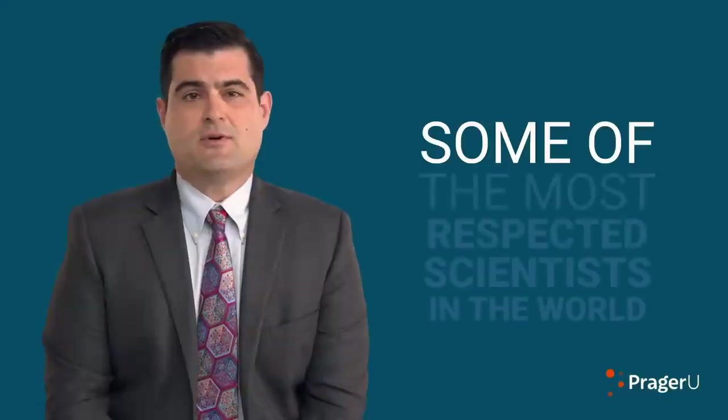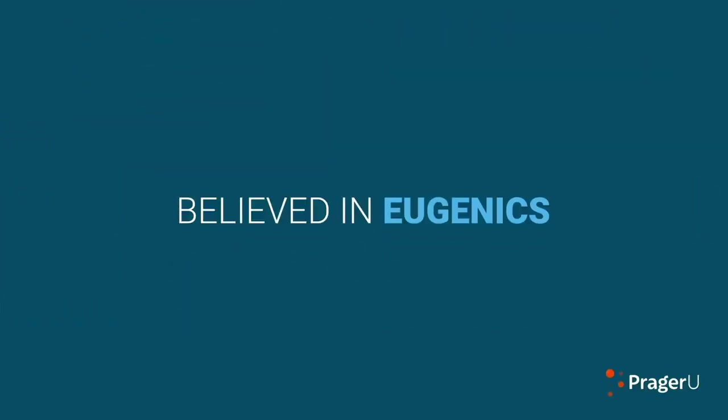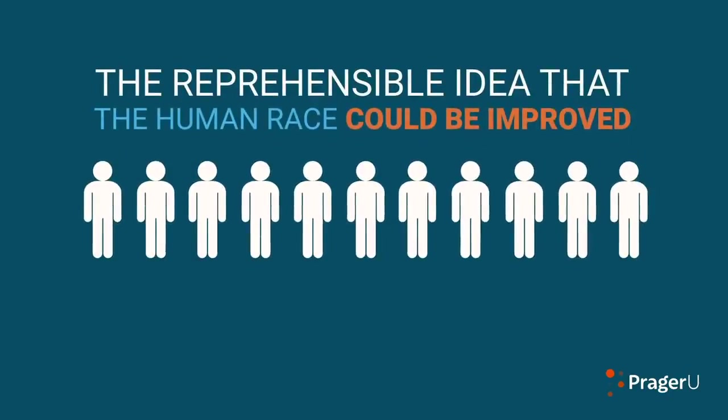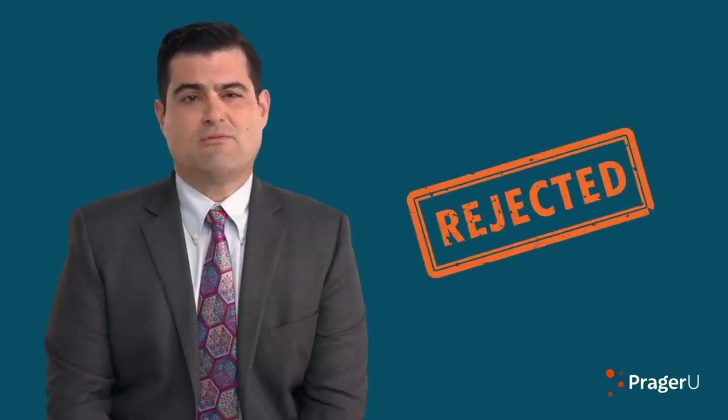In the 20th century, some of the most respected scientists in the world, including Nobel Prize winners, believed in eugenics—the reprehensible idea that the human race could be improved by selective breeding. The National Academy of Sciences, the American Medical Association, and the Rockefeller Foundation supported it. By the middle of the century, it had been thoroughly rejected as quackery. No reputable scientist would have anything to do with this idea.